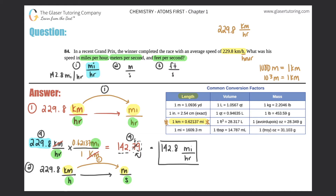Now, how do you go from hours to seconds? You have to stop at minutes first, because we know how many minutes are in an hour and how many seconds are in a minute. So we go to minutes first and then to seconds. Start with 229.8 kilometers per hour. Kilometer goes on the bottom, meter goes on top — I like to work numerators first then denominators, but it doesn't matter. 1,000 meters equals one kilometer, so that conversion is done.